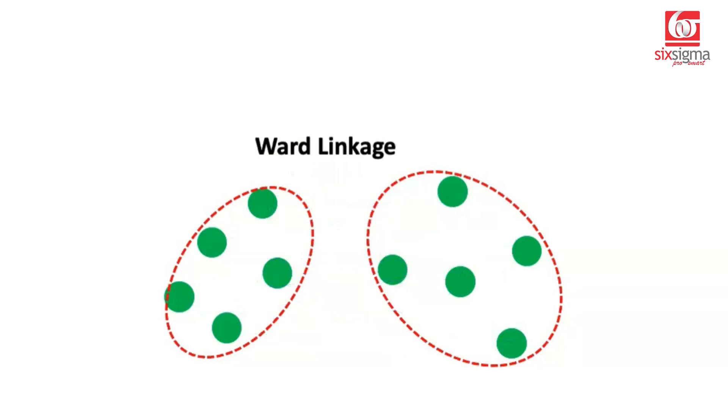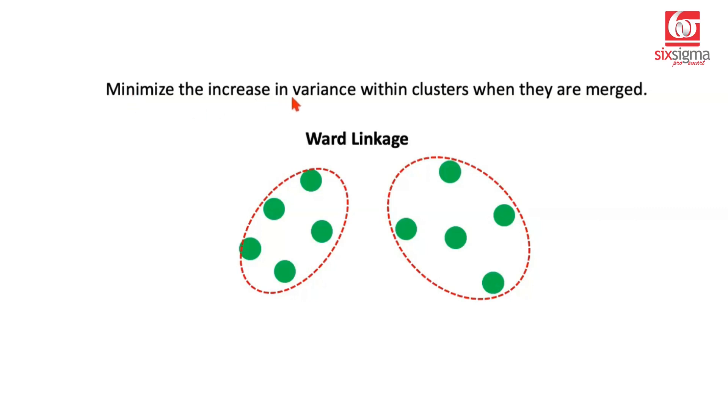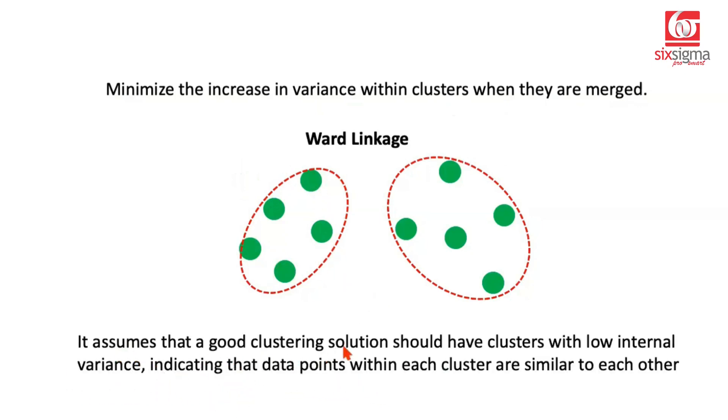The one linkage which is very popular these days and we've used in our hands-on exercise as well is known as the Ward linkage. What is Ward linkage? Ward linkage basically focuses on minimizing the increase in variance within the clusters when they are merged. So when the cluster merging is happening, when we're joining one point to another or one cluster to a point or a cluster to another cluster, the way we did hierarchical clustering, when that is happening, it keeps a check on not letting the variance increase a lot. Why? Because we want the points within the cluster to be very similar. So it assumes that a good clustering solution should have clusters with low internal variance. Internally, within a cluster, you shouldn't have much variance. This indicates the data points within each cluster are similar to each other. Now, often when you're trying to do cluster analysis using libraries from Python, they will always have some default values. You can always experiment by changing those default values. But if the default values give you good results, you can just stick to them.